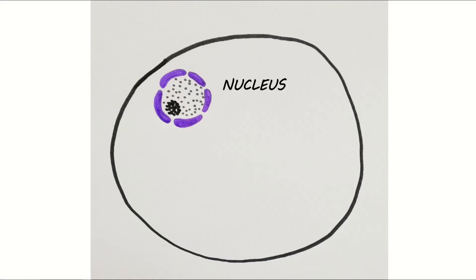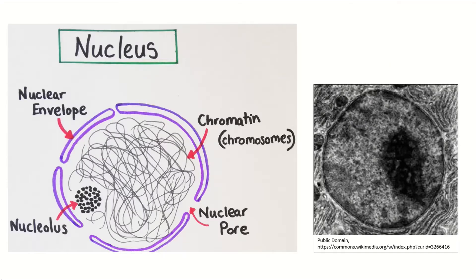The nucleus has a double membrane — that's two phospholipid bilayers — making up the nuclear envelope. Inside, we find the cell's genetic material in the form of chromatin, which is an indistinct mass of unravelled DNA.